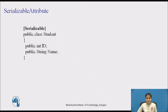The easiest way to make a class serializable is to mark it with the Serializable attribute. It indicates that a class can be serialized. This class cannot be inherited.